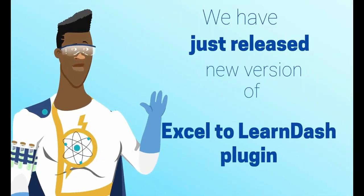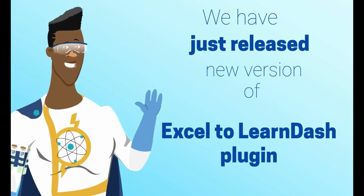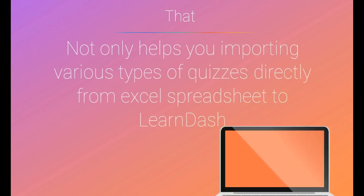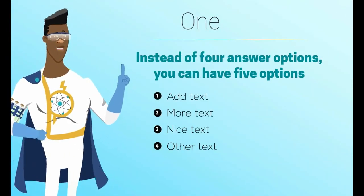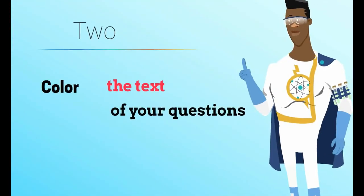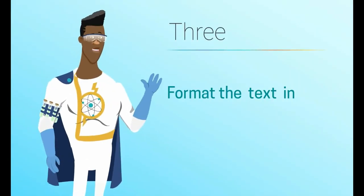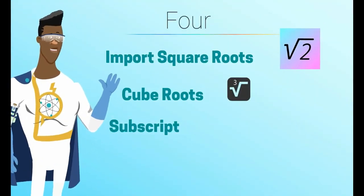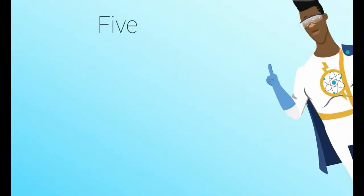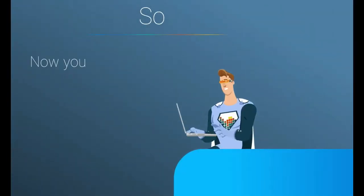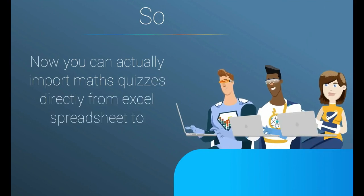We have just released a new version of the Excel to LearnDash plugin that not only helps you import various types of quizzes directly from an Excel spreadsheet to LearnDash, but also lets you do all of the following: one, instead of four answer options you can have five options; two, color the text of your questions; three, format the text in bold or italics; four, import square roots, cube roots, subscripts, superscripts; five, you can import quizzes with a division sign — so now you can actually import maths quizzes directly from Excel spreadsheets to LearnDash.